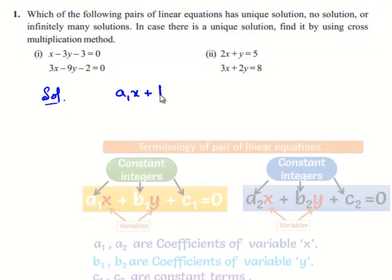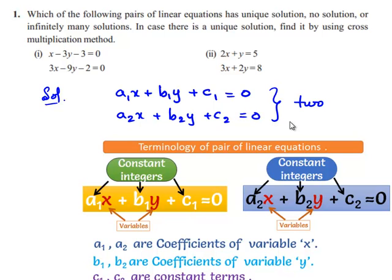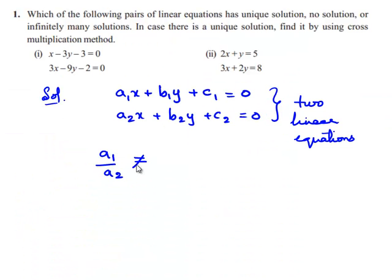Consider a1x + b1y + c1 = 0 and a2x + b2y + c2 = 0 as two linear equations. When a1/a2 is not equal to b1/b2, we say that the given pair of linear equations has a unique solution.